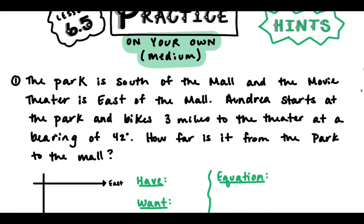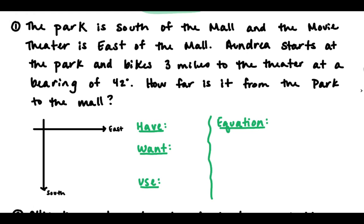Okay, so the first thing you want to do is draw your diagram. So we need to set up our map. Let's see. Our directions were south and east, so I kind of chose this section. And both the park and the movie theater are in relationship to the mall. So I'm going to put the mall in the middle.